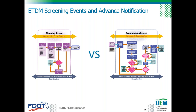During the programming screen, qualifying projects are reviewed when being considered for funding in FDOT's five-year work program or MPO transportation improvement program, or if already funded before advancing to the PD&E phase. During the programming screen, qualifying projects undergo ETAP review and coordination, and advanced notification may be initiated. At the conclusion of the programming screen, the project scope is developed and the final programming screen summary report is published. ETAP coordination is ongoing throughout planning and programming events and both the ETDM manual and PD&E manual are followed.